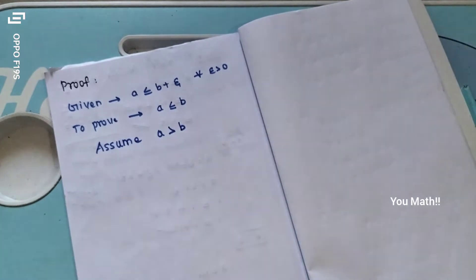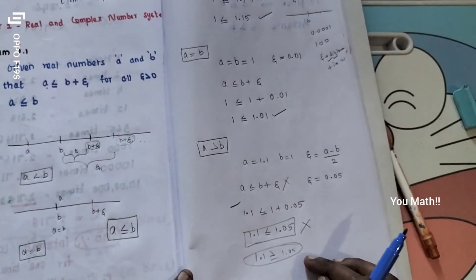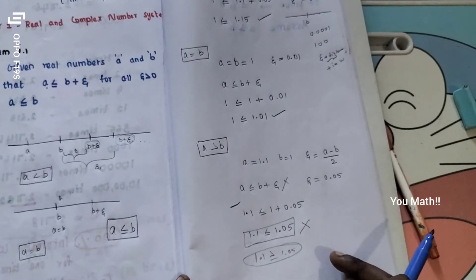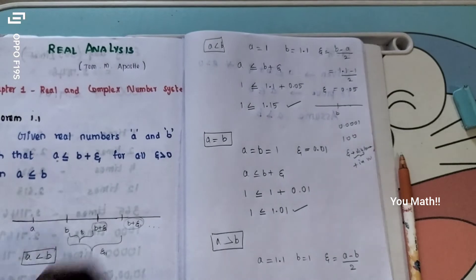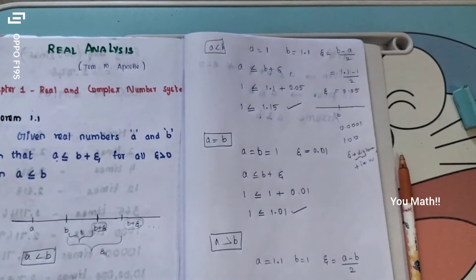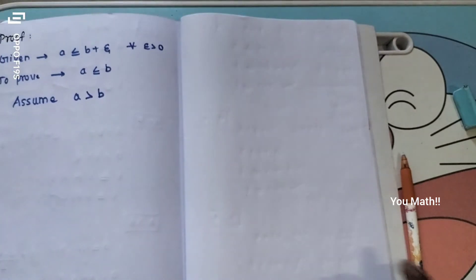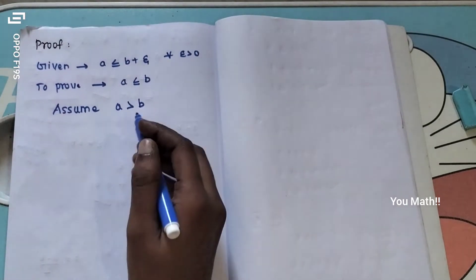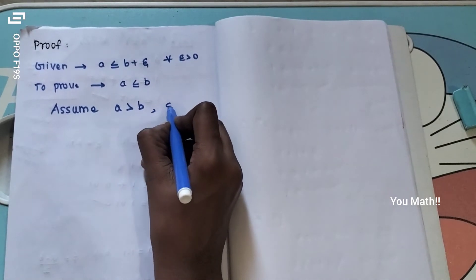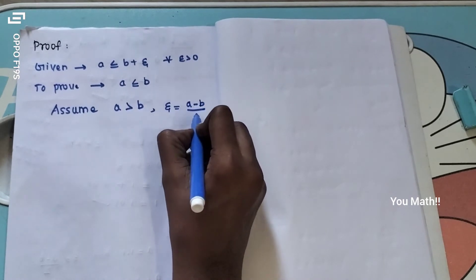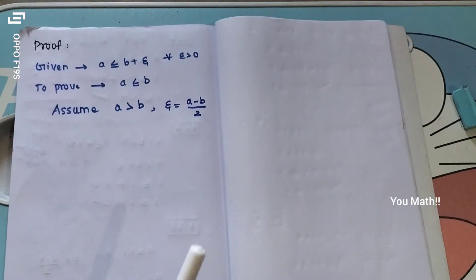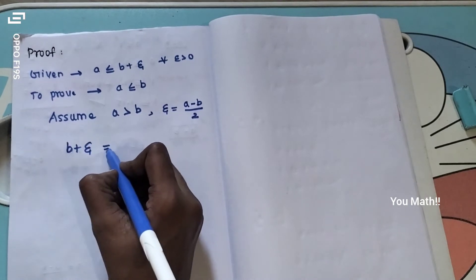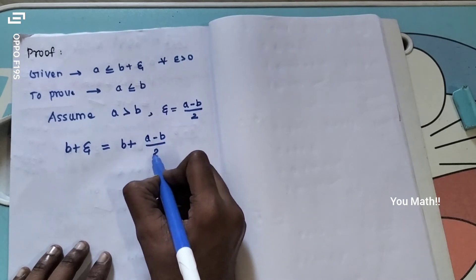Assume a is greater than b. We have a third condition. This condition has been written and we can contradict it. The statement is not going to hold in this case. We want to find a such that a is greater than b. Then we choose epsilon equals a minus b divided by 2. So b plus epsilon equals b plus a minus b divided by 2.